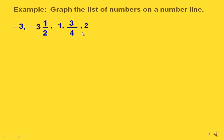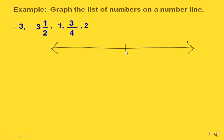So let's take this whole list of numbers and graph them on a number line. Let's put zero in the middle. Our first integer to graph is negative 3. Since it's negative, that means we're going to the left. So here's negative 1, negative 2, and negative 3. There's negative 3.